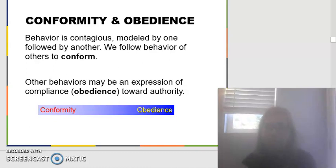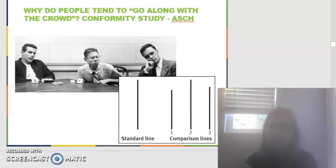Some of the classic study that has been done on conformity is a simple line study we call the ASH study. ASH is who first started it.